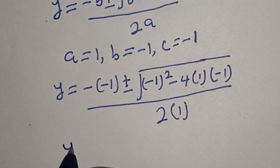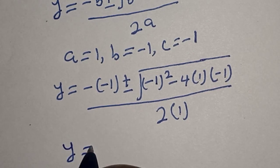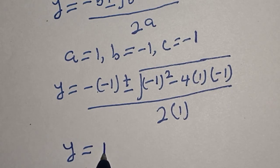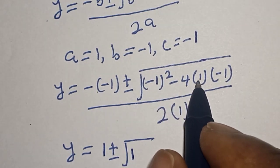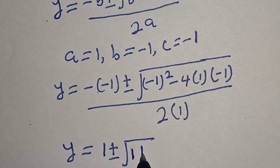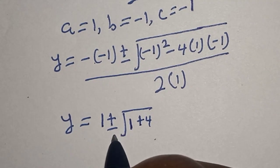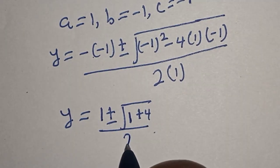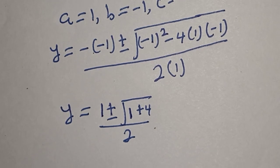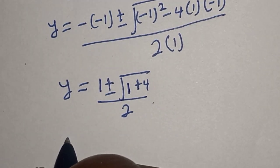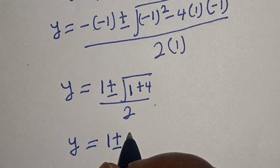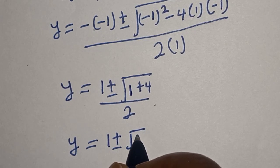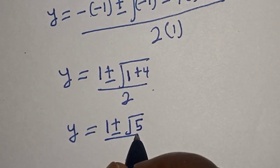We get y equals 1 plus or minus square root of 1 plus 4, all divided by 2. That is, negative times negative 1 gives positive 1, then 1 squared is 1, and negative 4 times 1 times negative 1 gives positive 4. So y equals 1 plus or minus square root of 5, divided by 2.